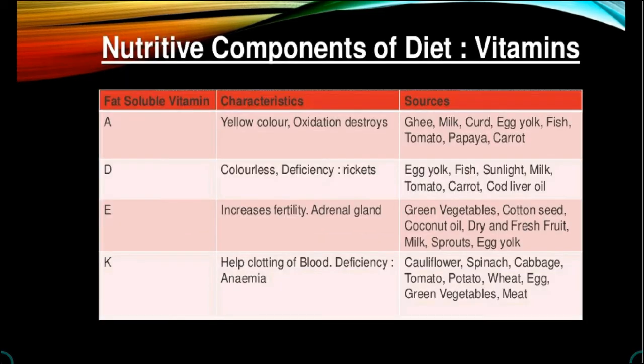The next nutritive component of diet is vitamins. Vitamins are important nutritive components of food just like proteins, carbohydrates and fats. Vitamins are vital for healthy life; they protect us from various types of diseases and increase immunity in our body. They also contribute to the general development of our body. If our diet lacks various vitamins, we may suffer from different deficiency diseases, though we need these vitamins in varying quantities.